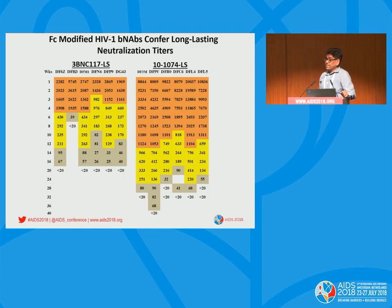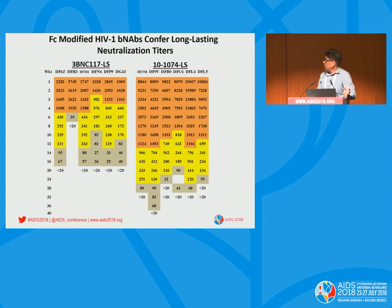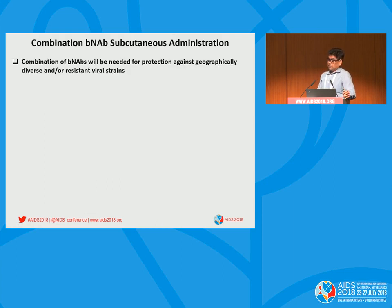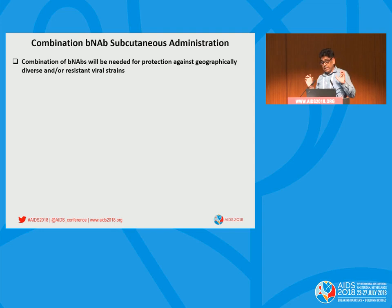We monitored neutralizing titers and antibody concentrations longitudinally over 40 weeks, using a heat map where red indicates titers above 1,000, yellow indicates 100–999, and green indicates less than 20. In one monkey, neutralizing activity was detectable even at 36 weeks post-administration. Because HIV is so diverse — so many clades, strains, and serotypes — we need combinations of BNAbs targeting different epitopes of the envelope. Intravenous administration is not practical in the field, so subcutaneous administration is far more desirable.